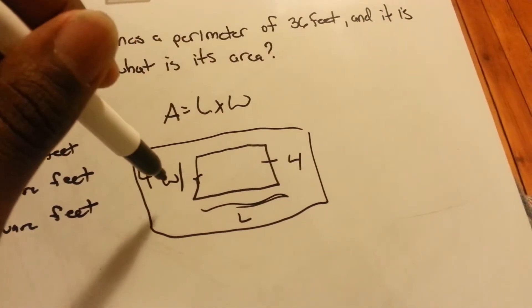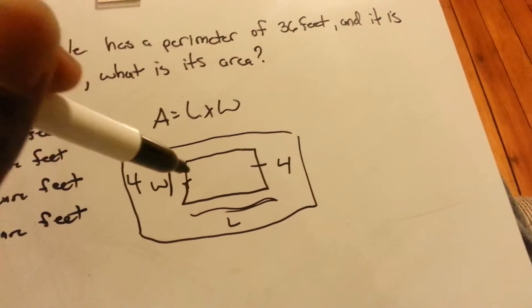So that means all the way around this rectangle is 36 feet. So two sides are 4 feet each. That's 8 feet.